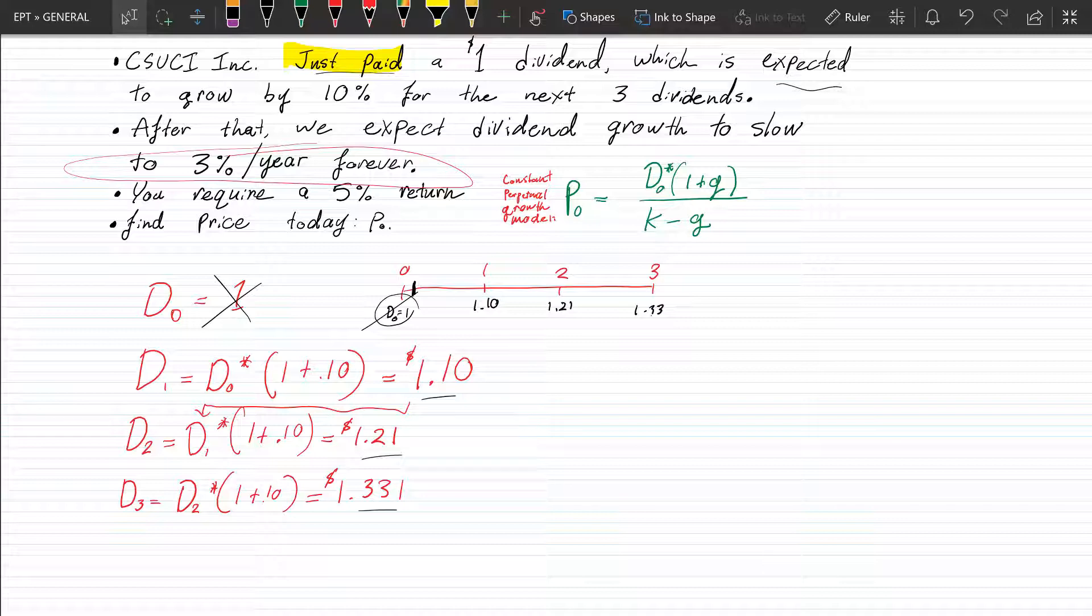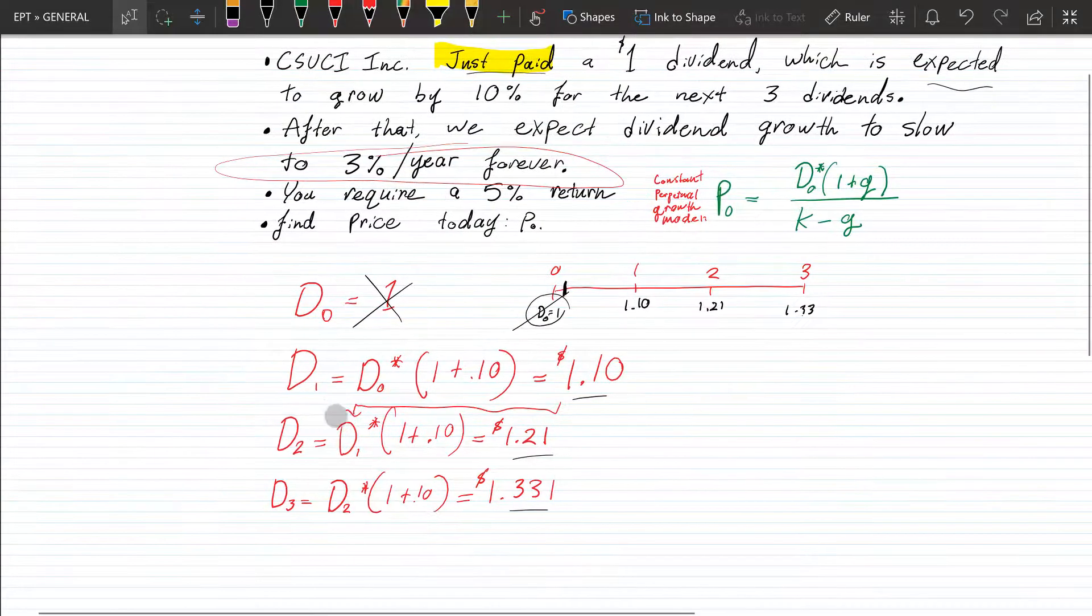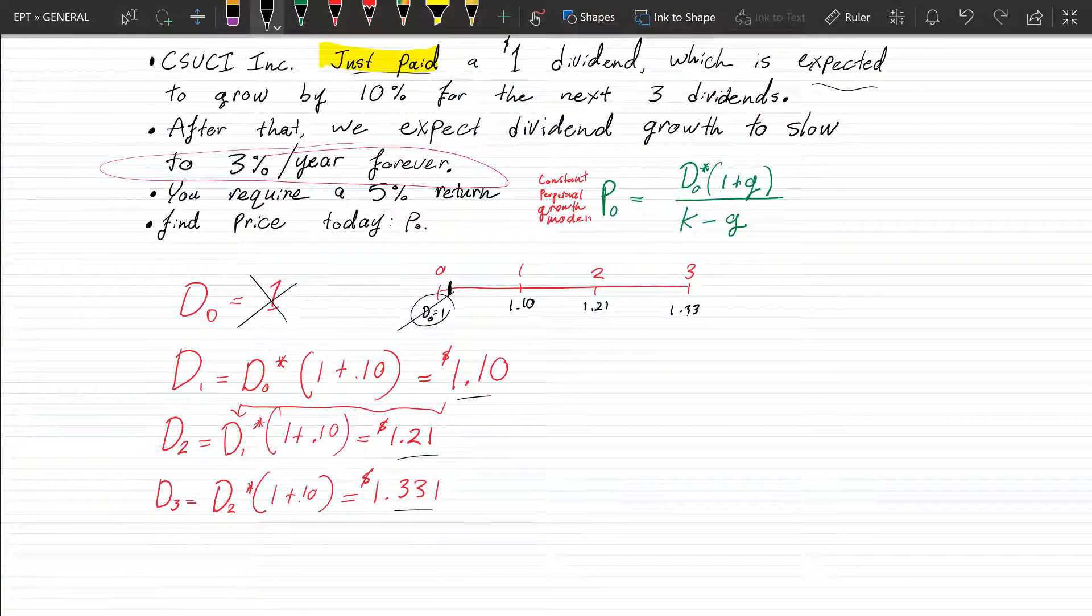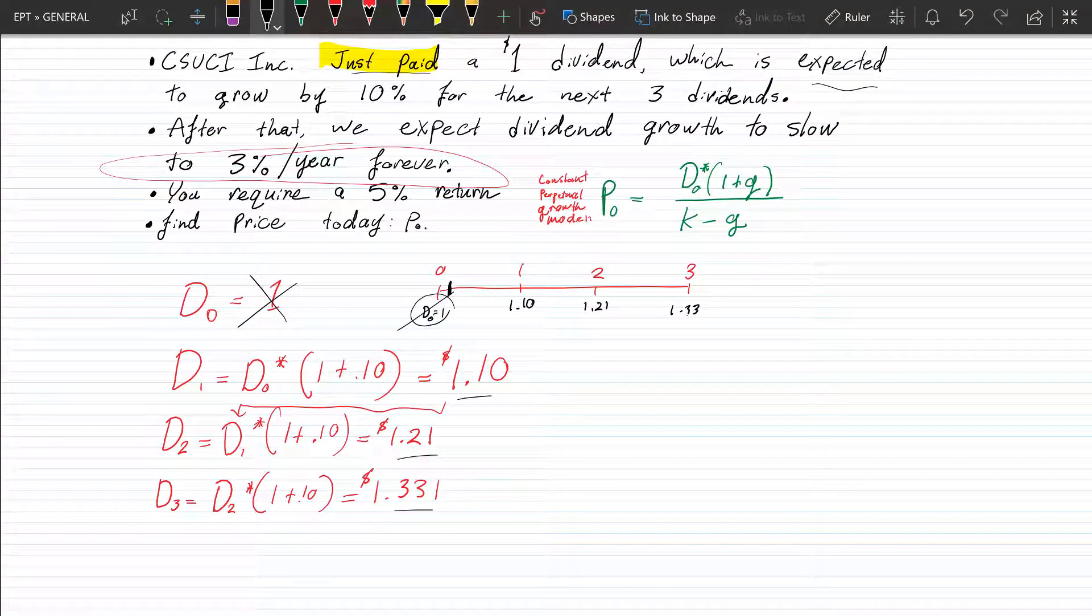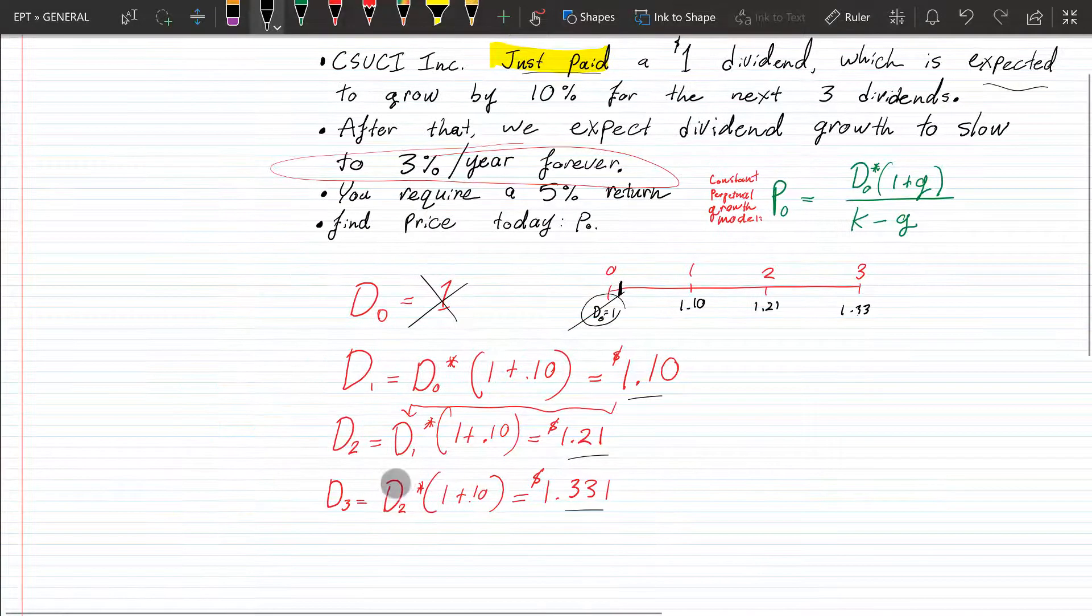So how do we find out, if we know, if we can assume, at least, that now that the dividend growth has slowed to 3% per year past year three, how are we going to find the present value at year three in order to get the price at which we would sell it? Well, this is how.